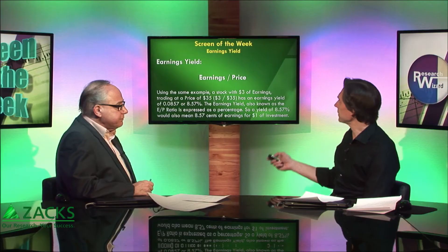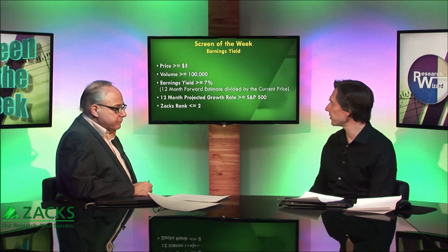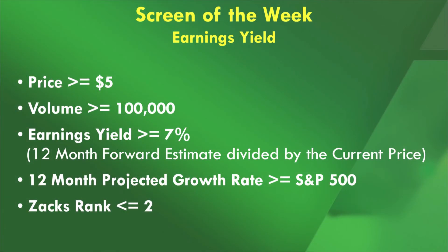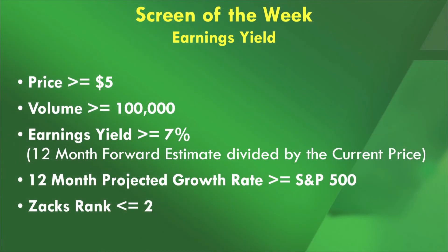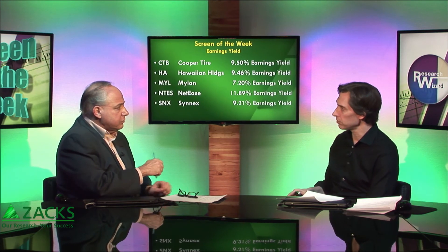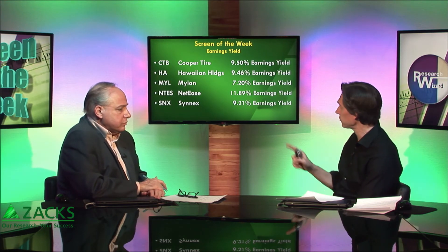Run down the screen for us. It's pretty simple. We start with the usual: stocks trading at $5 or higher, average volume of 100,000 shares or greater. For this screen, the earnings yield has to be greater than or equal to 7% — since the broader market earnings yield is just over 6%, we want this to be a little better. The 12-month projected growth rate has to be greater than the S&P 500, and all stocks must have a Zacks rank of 2 or better — 1 or 2. There were 63 stocks when I ran it this morning.